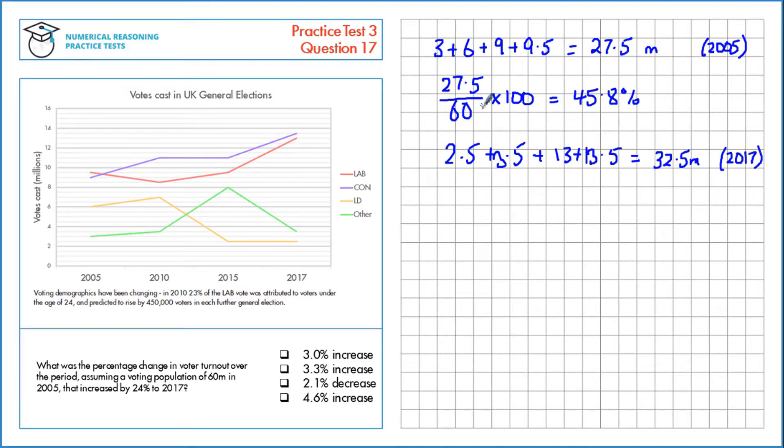We'll do the same calculation again. So 32.5 million divided by 60 million, and we've been told that this 60 million increases by 24% by 2017. To increase something by 24%, we multiply by 1.24. So once we do this division, we can multiply by 100 to write that as a percentage, which gives us 43.7%.